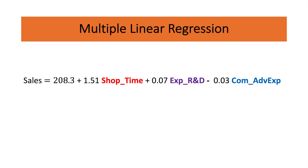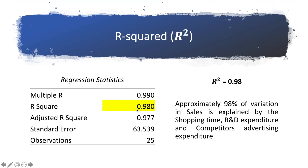Next, interpret the R-squared. The R-squared value is 0.98. So approximately 98% of the variation in sales is explained by shopping time, R&D expenditure, and competitors' advertising expenditure. There is an extra 2%, so basically 98% of the variation in sales is explained by the independent variables. Probably there are some other variables which fall into that 2% that also influence or explain the variation in the dependent variable.